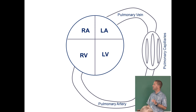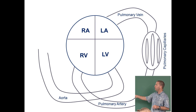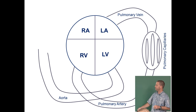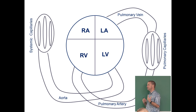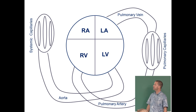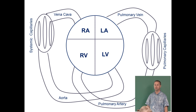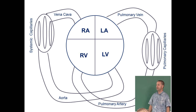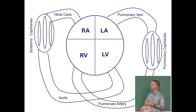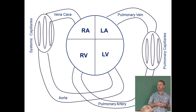Now for the systemic circuit on the other side. Coming out of the left ventricle we have the aorta — an artery — which goes to the systemic capillaries throughout the body's tissues. After that, blood is returned to the heart by the vena cava (cranial and caudal). The systemic circuit is longer and more circuitous than the pulmonary circuit, requiring greater force — that's why the left side of the heart is more muscular.